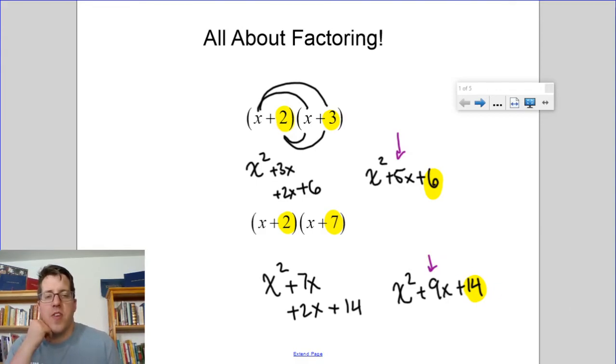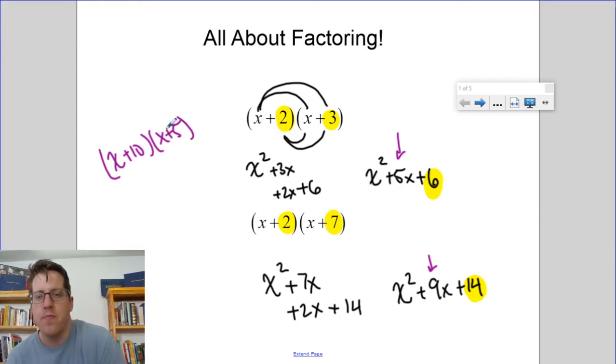Pause the video for a second and see if you can put a name on what that pattern is. So the way that I describe this pattern is that the two numbers in the parentheses multiply to make the final number and they add to make the middle coefficient. So for example, if I gave you x plus 10 times x plus 5, your answer would be x squared plus 15x, that's 5 plus 10, plus 50, 5 times 10.